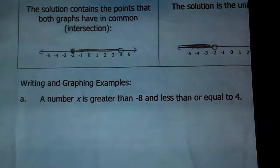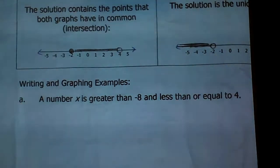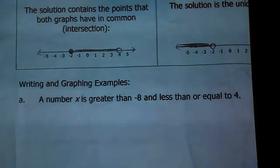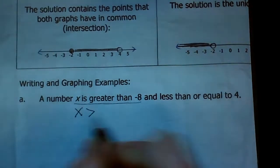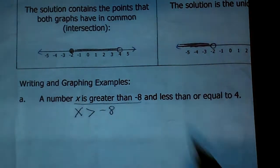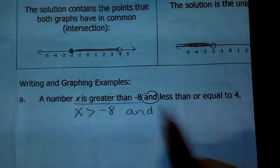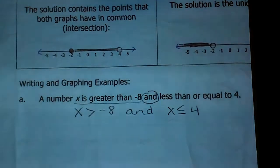Here are writing and graphing examples. A number x is greater than negative 8 and less than or equal to 4. We can start by writing this as two separate statements: x is greater than negative 8 — and here's the keyword 'and' — so this is an 'and' inequality. And x is less than or equal to 4. That's one way of writing this. I could also do the shortcut statement, and I want you to be able to do both.